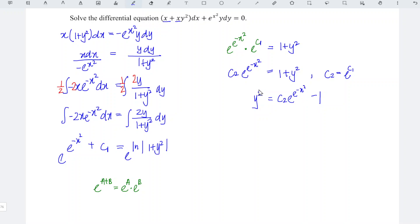If let's say we don't want the square, we can rewrite y is equal to plus minus square root of c2 e^(-x²) minus 1. And hence, we're done.